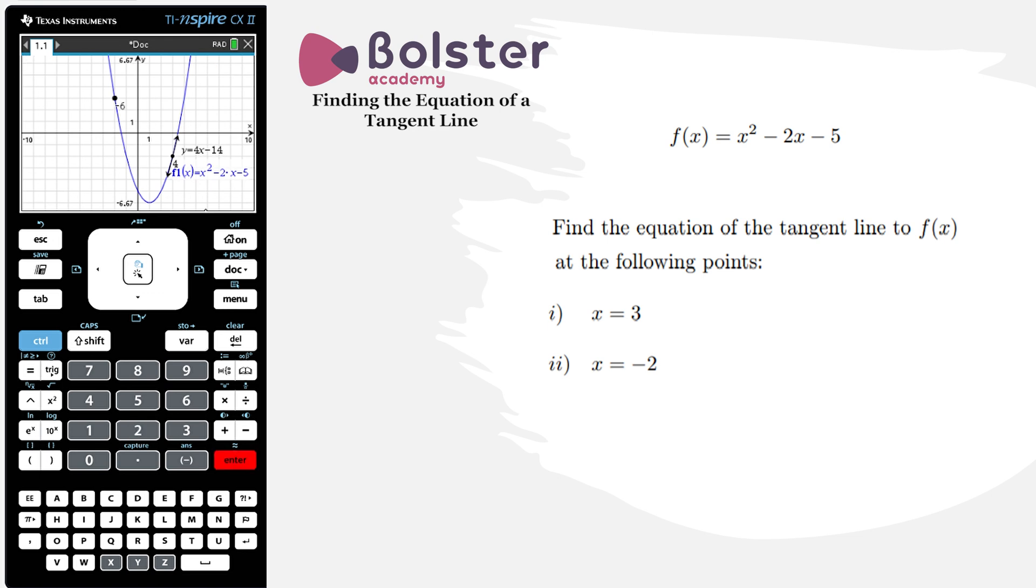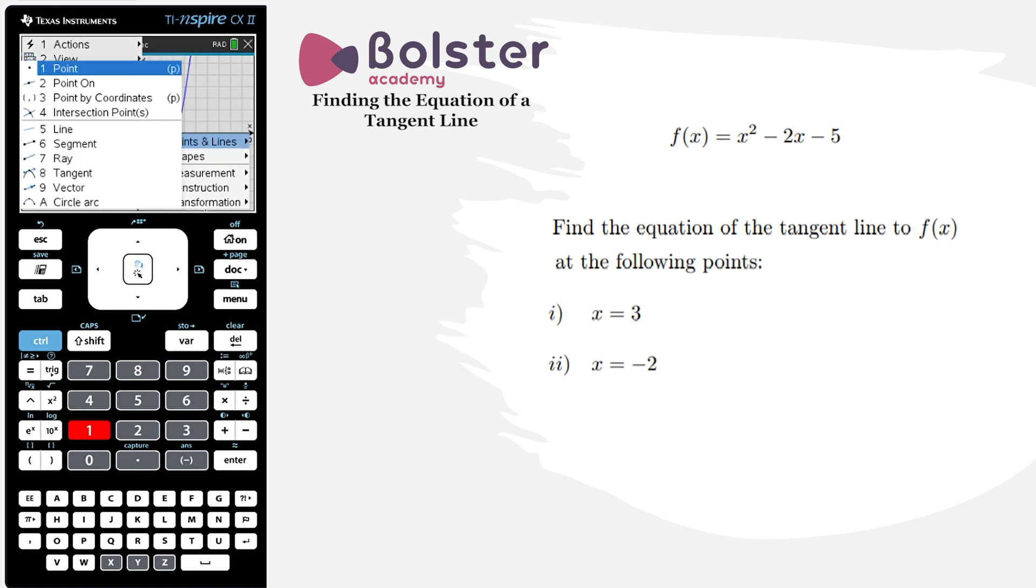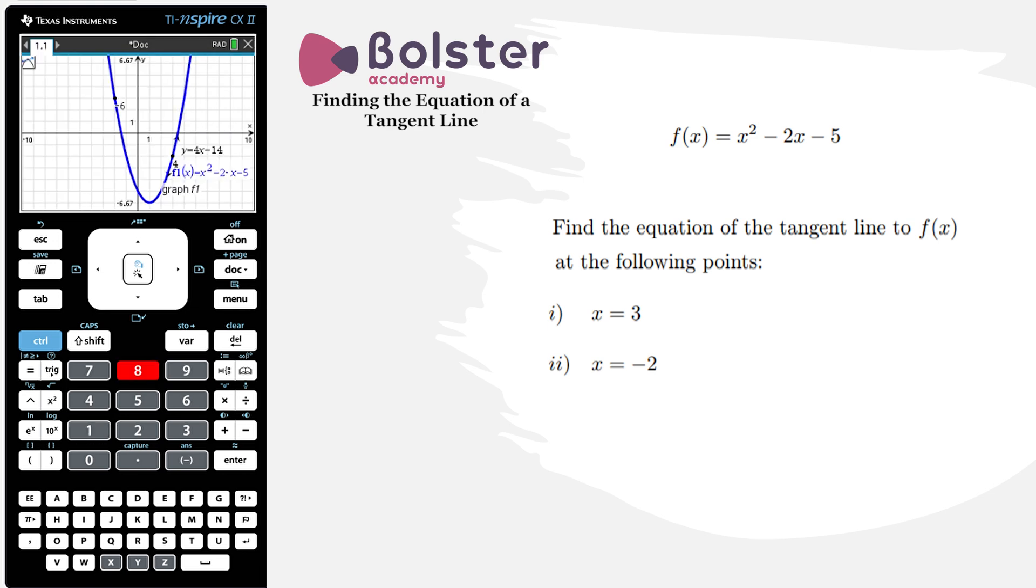There we go and now we're going to go and get the equation of the tangent line at that point. So geometry option number 8, points and lines, tangent, choose my graph and then choose the point where I want the tangent line. Up pops my equation straight away and again we'll just move it out of the way so we can see it very clearly. It's y equals minus 6x minus 9.